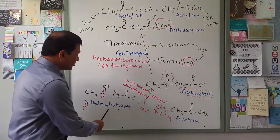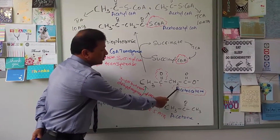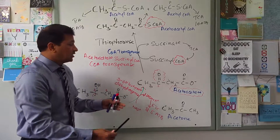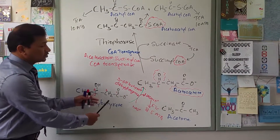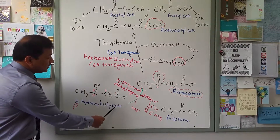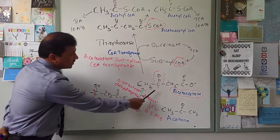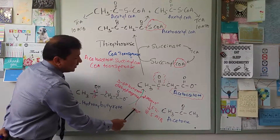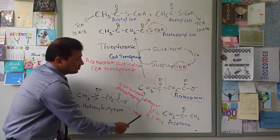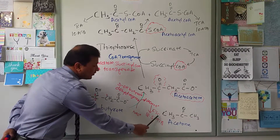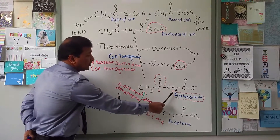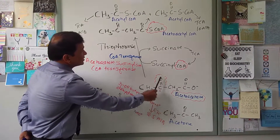Consider beta-hydroxybutyrate entering skeletal muscle. How many ATPs does it give? Beta-hydroxybutyrate in skeletal muscle is converted to acetoacetate, where NAD+ is consumed and NADH + H+ is released. That NADH + H+ will give you 2.5 ATP. So there is a 2.5 ATP gain at this step. Now you have acetoacetate.